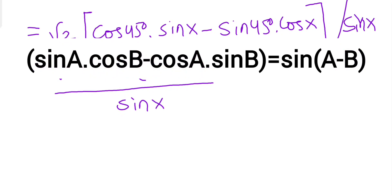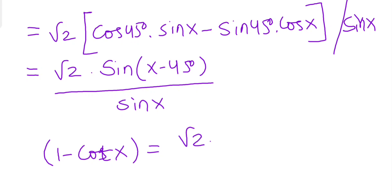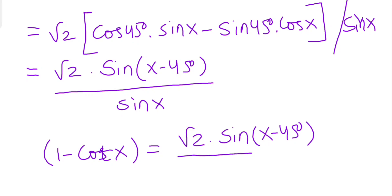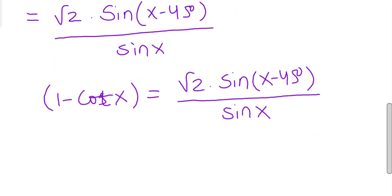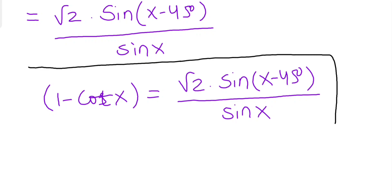So it means (1 - cot x) equals √2·sin(x - 45°) / sin x. We can put this in a bracket so that we can use it for each term.